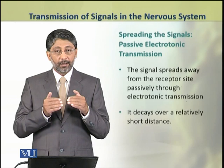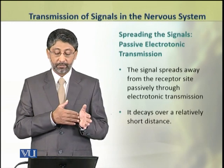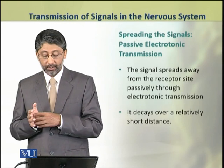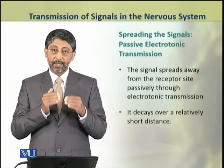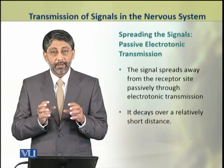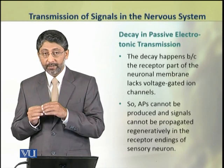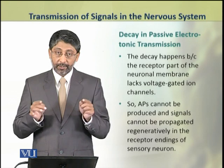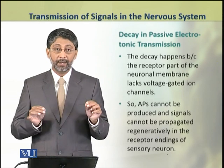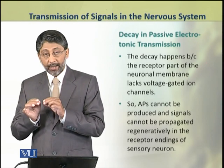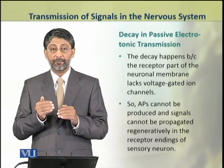After receiving the signal, it spreads away from the receptor site passively through electrotonic conduction to the cell body part of the neuron. However, this signal decays over a relatively shorter distance. The decay happens because of the resistance of the cytoplasm in the cell body, as well as because this part of the neuron does not contain voltage-gated ion channels. So action potentials cannot be propagated or produced in this part of the sensory neuron.